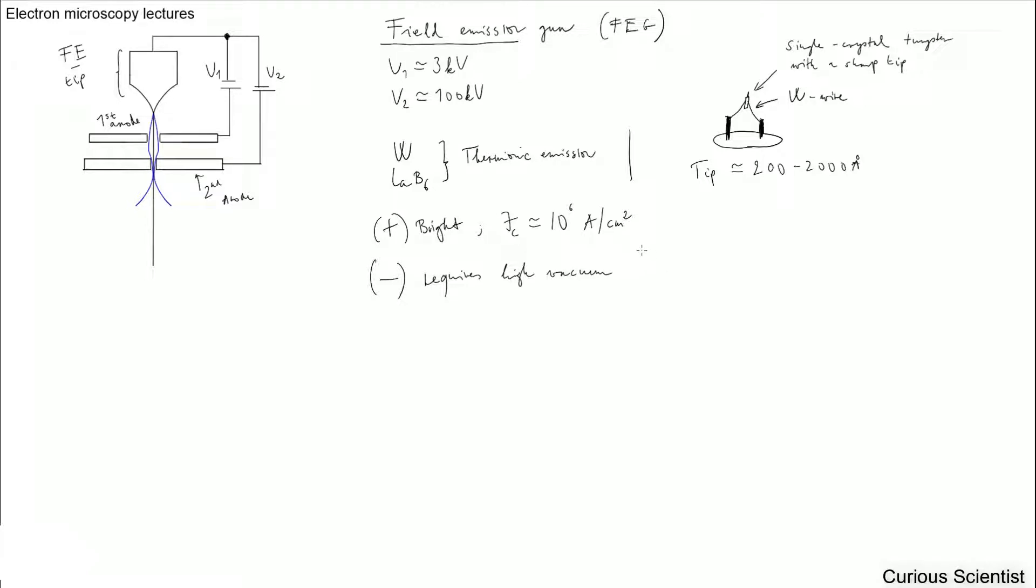But we need very high vacuum. And this is 10 to the minus 10 Torr. So very low pressure. And it can be unstable. So that's also a disadvantage.